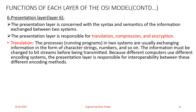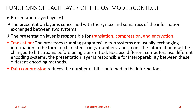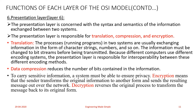Encryption: if you are carrying private or confidential information, a system must be able to ensure its privacy. Encryption means the sender transforms the original information to another form and sends the resulting message over the network. The receiver, on the other hand, can perform the decryption process — which is the opposite of encryption — to get the data back in its original form.